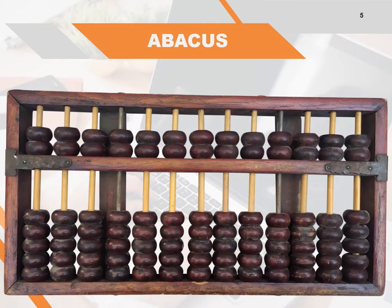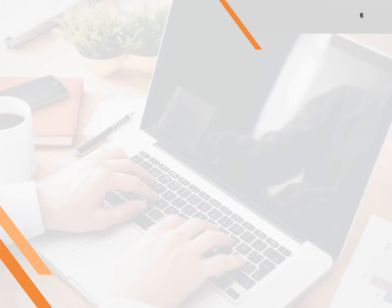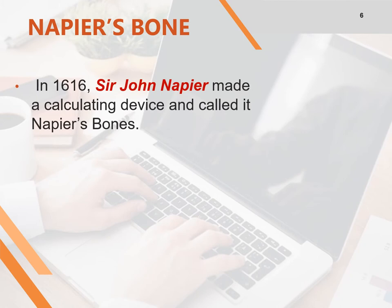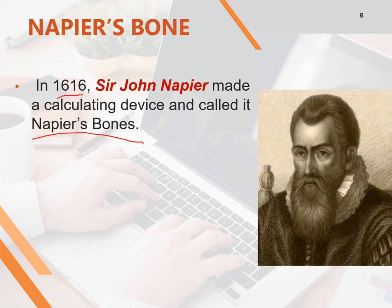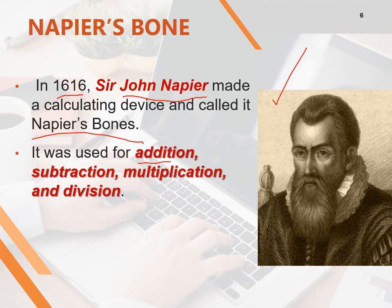This is Abacus, the first calculating device. The next calculating device is Napier's Bones. In the year 1616, Sir John Napier made a calculating device called Napier's Bones. It was used for addition, subtraction, multiplication and division.